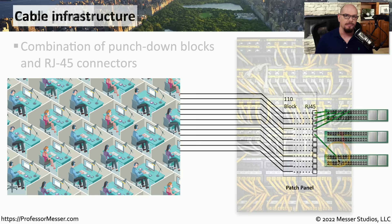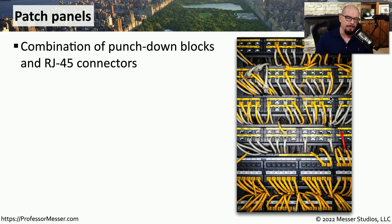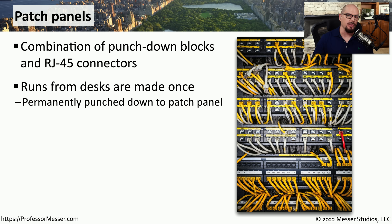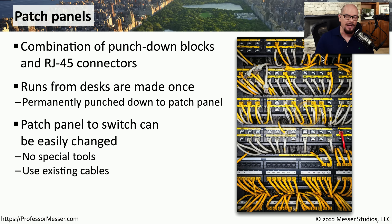Here is the RJ45 side of a patch panel in a wiring closet. If you look closely behind the patch panel, you can see all of the cable runs coming from the desks, and the RJ45 connectors on the front ultimately connecting to a switch. Nothing changes with the wiring between a user's workstation and the closet, because all of that is punched down and permanently connected to the back of the patch panel. When you need to make a change, you simply move the cable on the front of the patch panel. With RJ45 connectors, you don't even need special cabling — you simply unplug the cable, move it to where it needs to be, and plug it into the new interface.